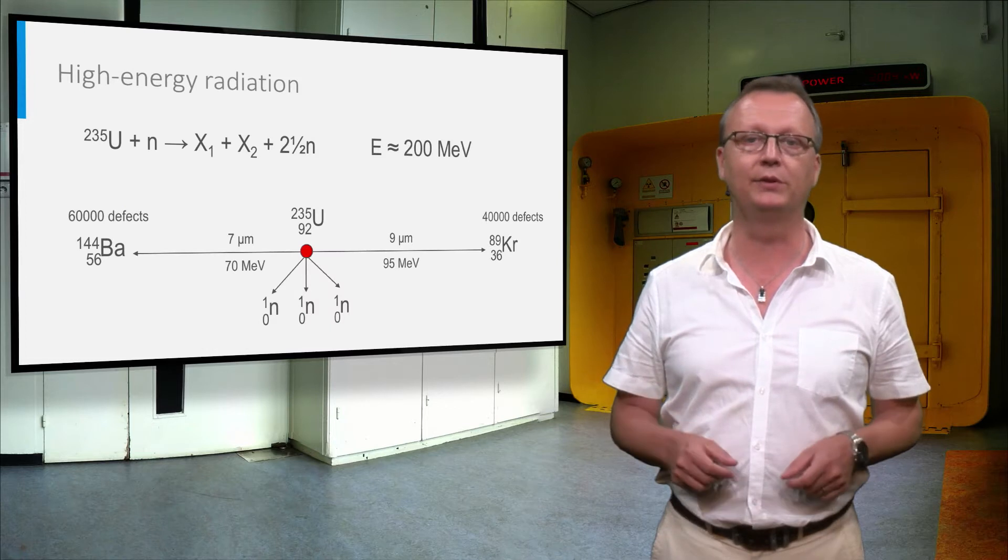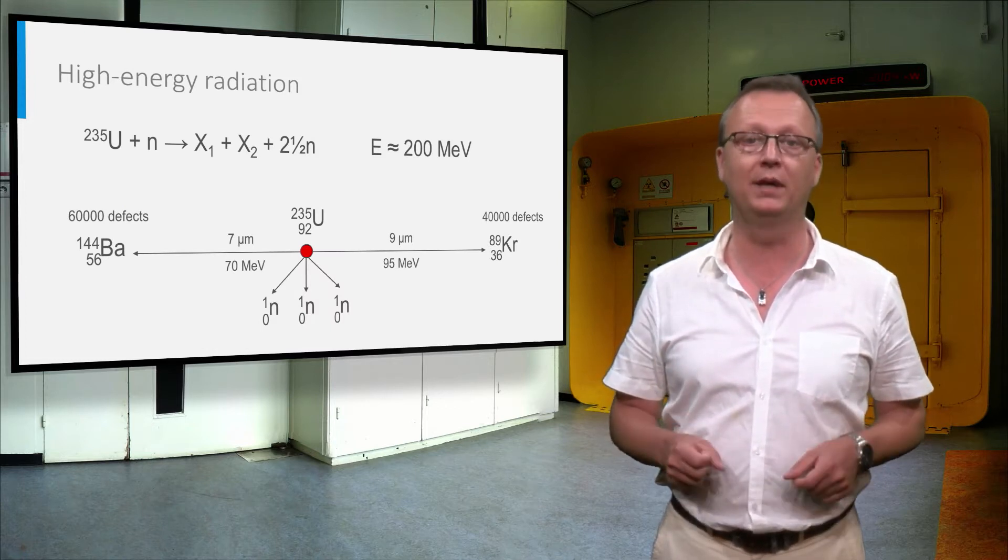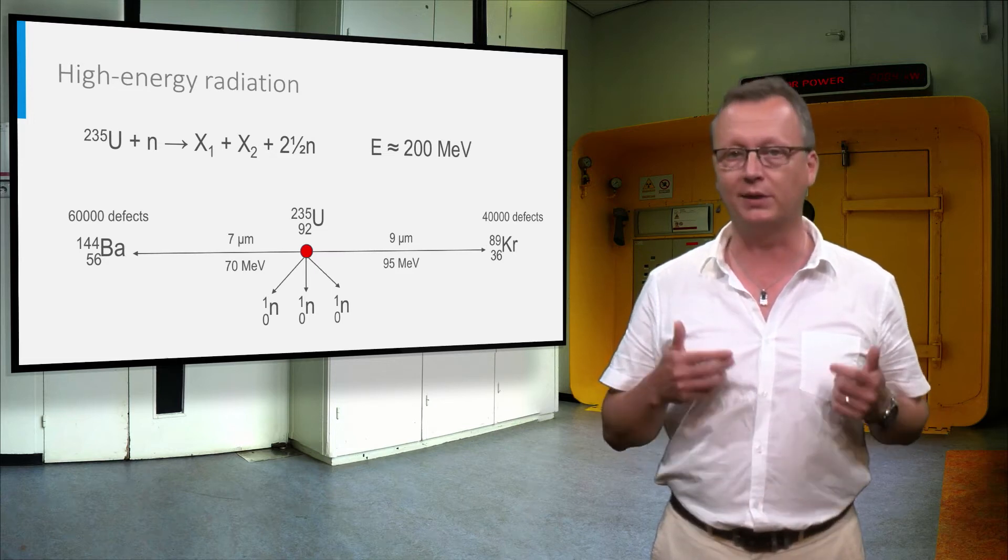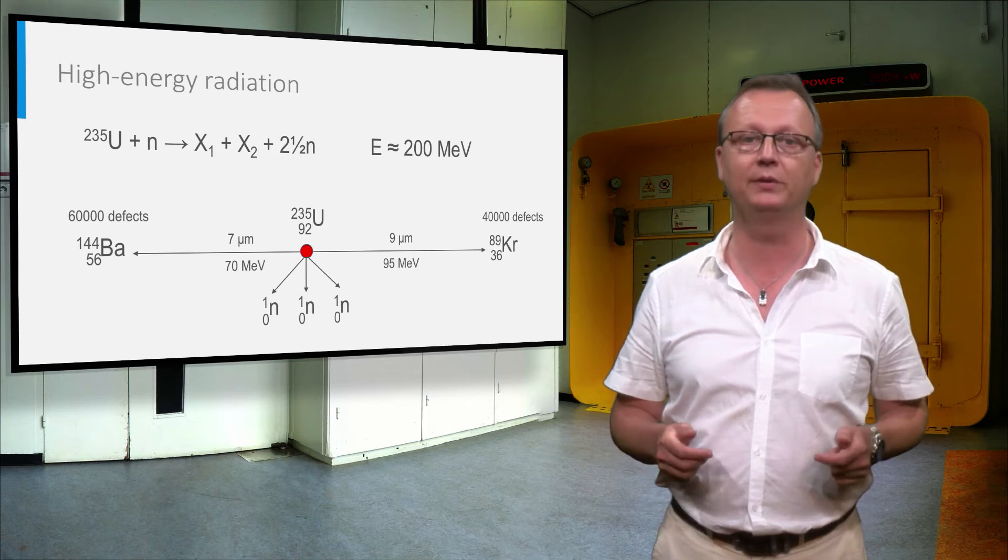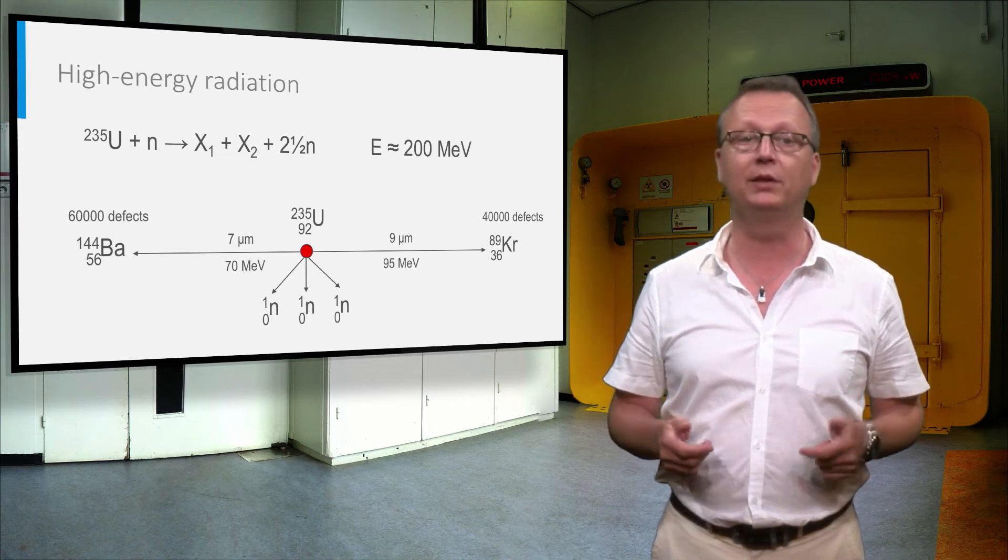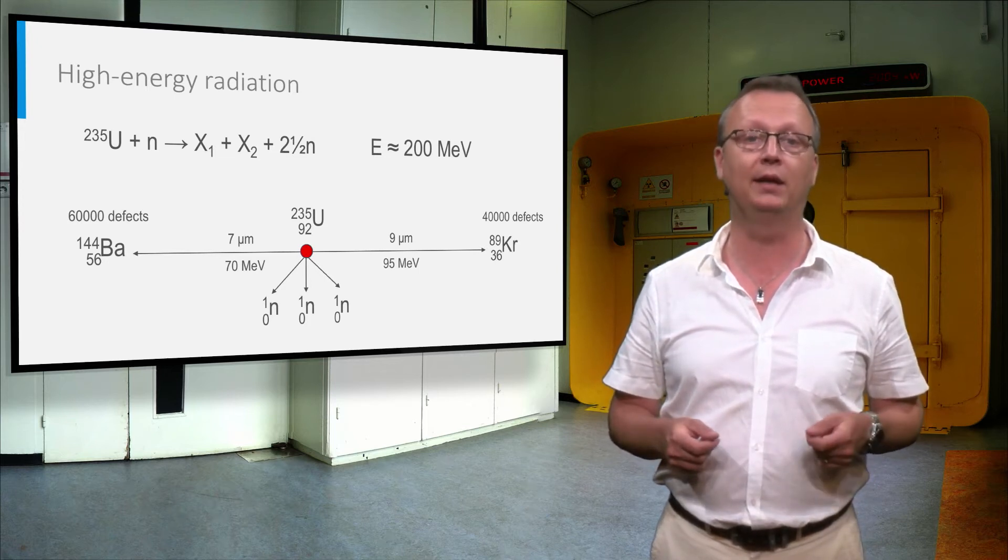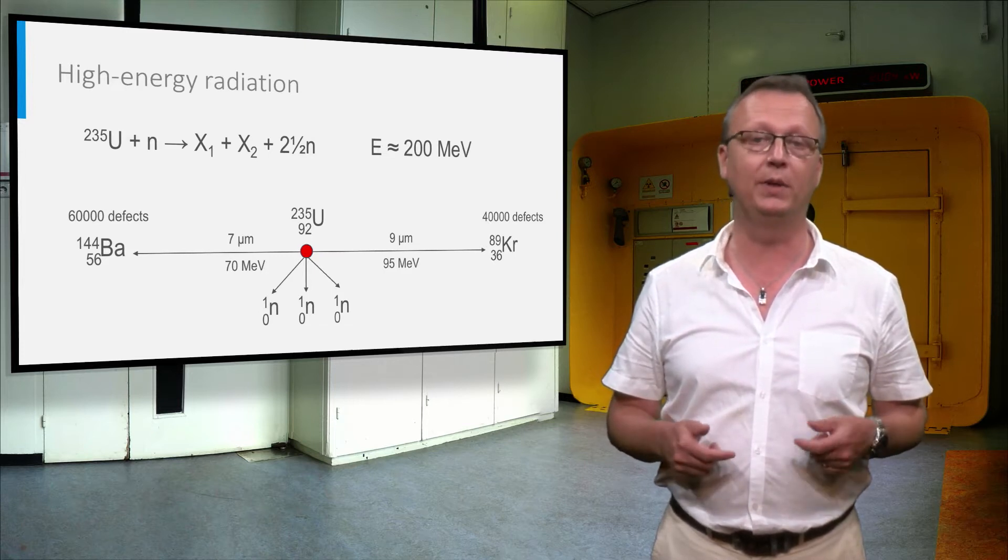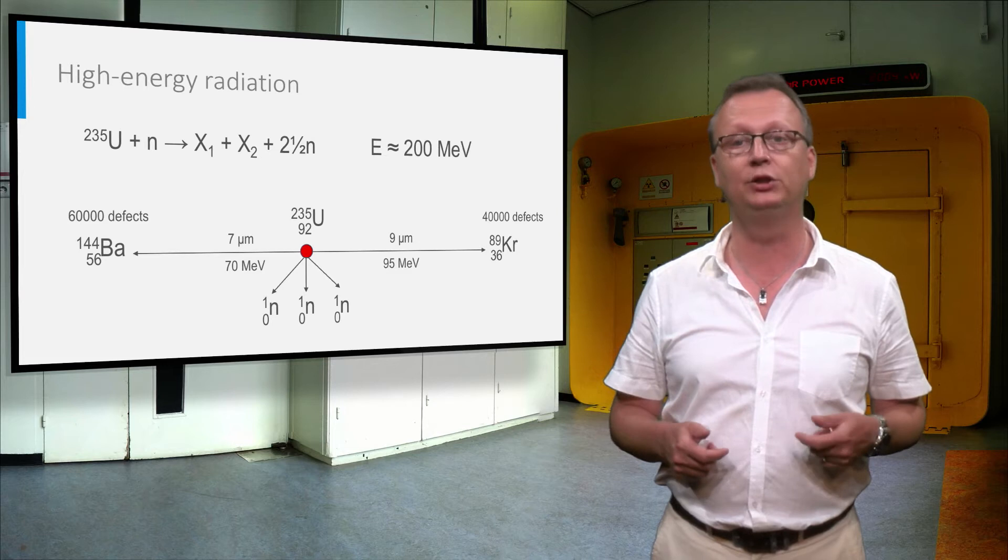The fission process creates two fission products and releases at the same time about 200 mega electron volt energy. Most of the energy is transferred as kinetic energy to the fission products, which have the capacity to knock atoms from the crystal lattice of UO2, creating vacant positions and displacing atoms to non-regular interstitial positions.